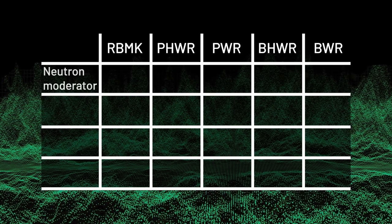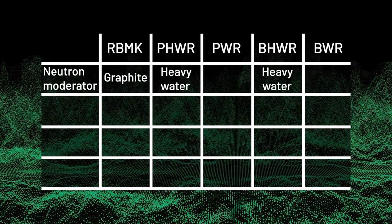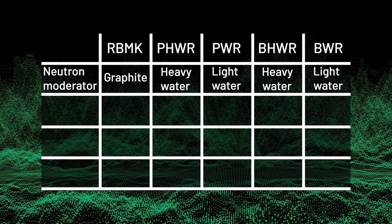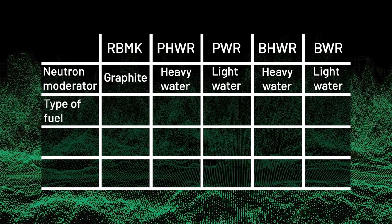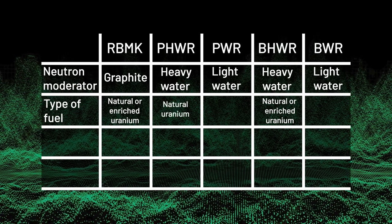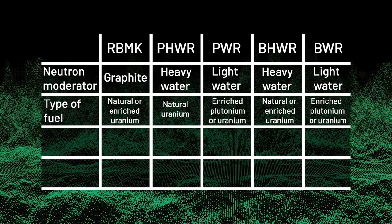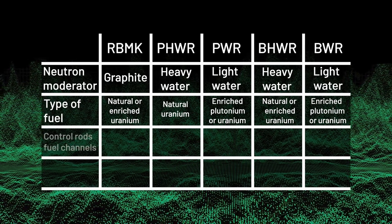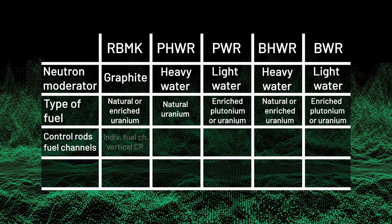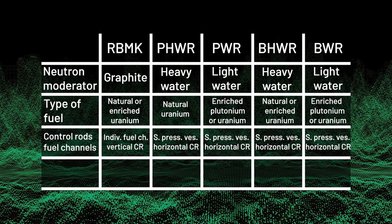We've focused on four aspects of each reactor type so you can easily see the differences. First, type of neutron moderator: in the RBMK it's graphite; in the PHWR and BHWR it's heavy water; in PWR and BWR it's light water. Second, type of fuel: in the RBMK it's natural uranium or enriched uranium; in the PHWR it's natural uranium; in the BHWR it's natural uranium or enriched uranium; in PWR or BWR it's enriched uranium or plutonium. Third, arrangement of fuel and control rods: the RBMK has individual fuel channels and vertical control rods, while all the other reactors have a single pressure vessel and horizontal control rods.